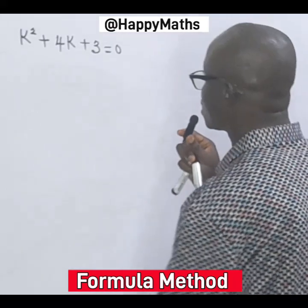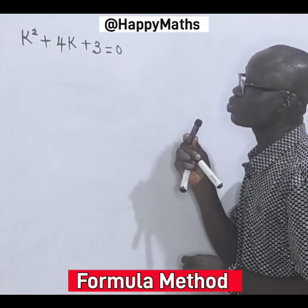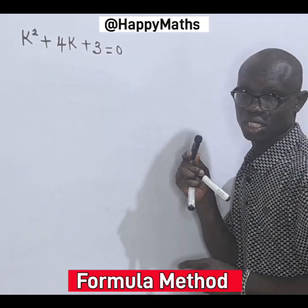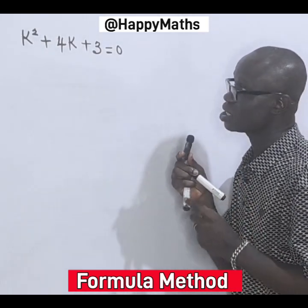Hello, great. We have this happy maths. We have k squared plus 4k plus 3 equals zero. We have completed the square for this equation. Now I want to use the formula method. Please, maths is not difficult. Build capacity. Now let's move.